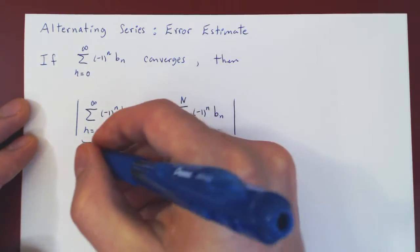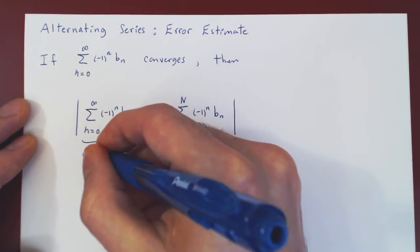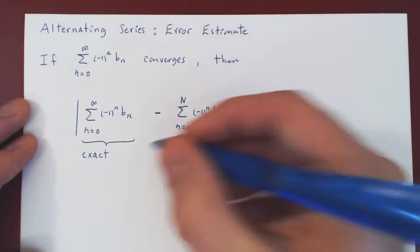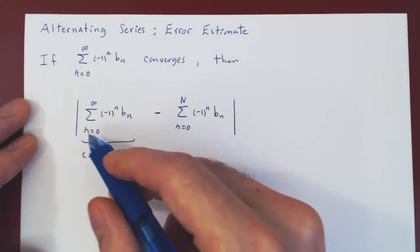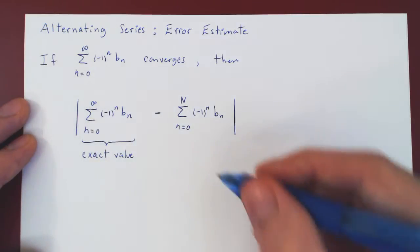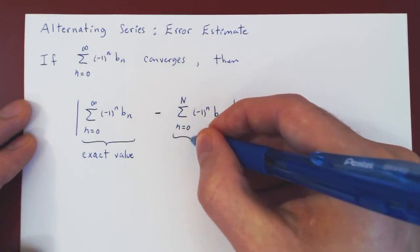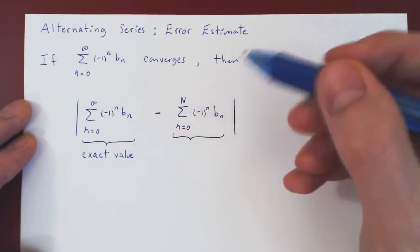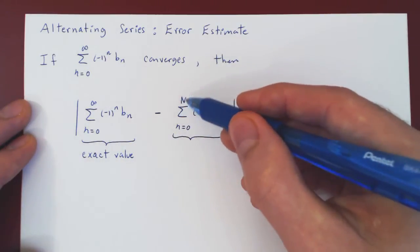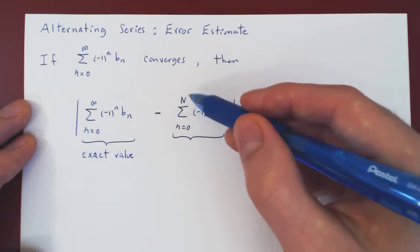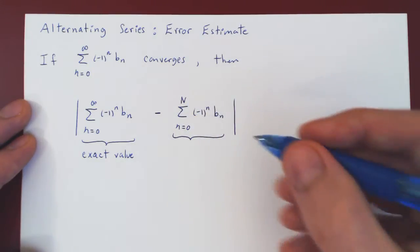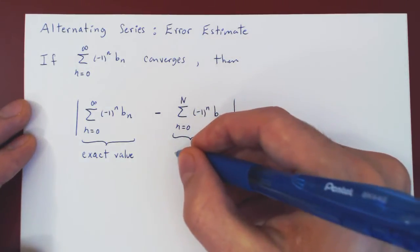And I really want to stress this here. This is the exact value of the series, we're summing all the terms. And here, as we're summing only the first few terms, we're starting at 0 and we're stopping at a fixed point. n here could be 10, could be 7, could be 23. Any given point will do. This is, of course, an approximate value.